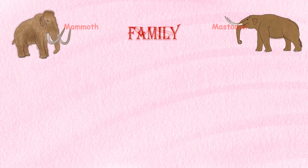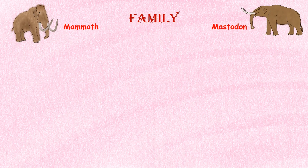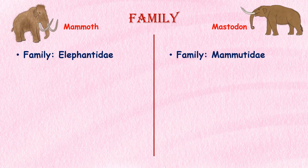Family. Mammoths belong to the family Elephantidae, which includes modern-day elephants. Mastodons, on the other hand, belong to the family Mammutidae, which is a distinct and separate family from the elephants.